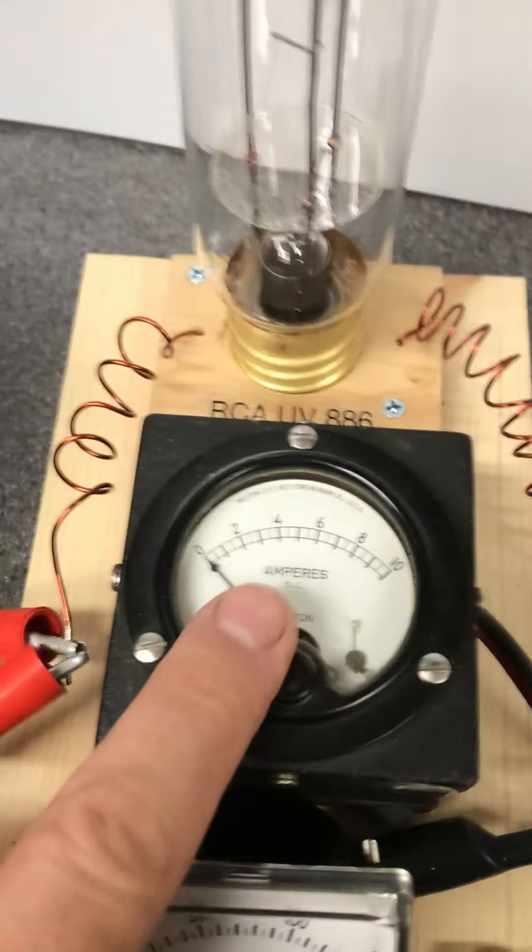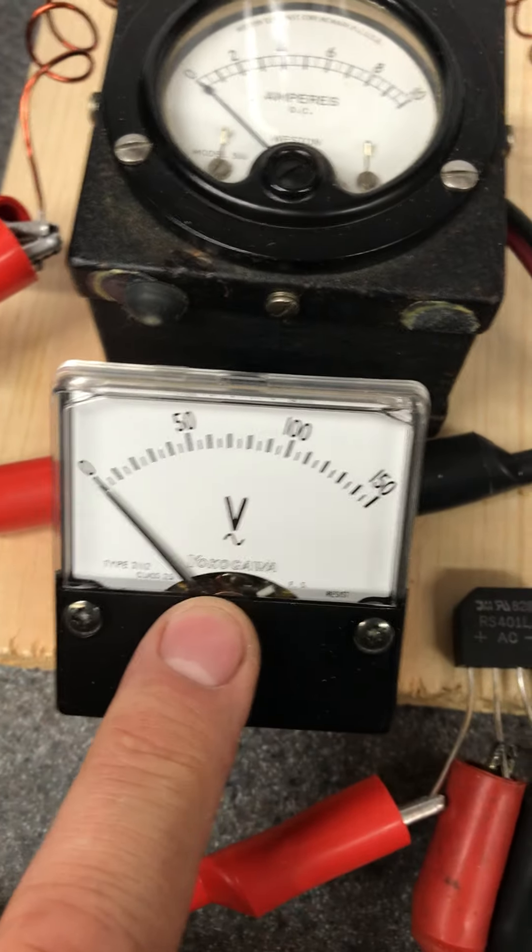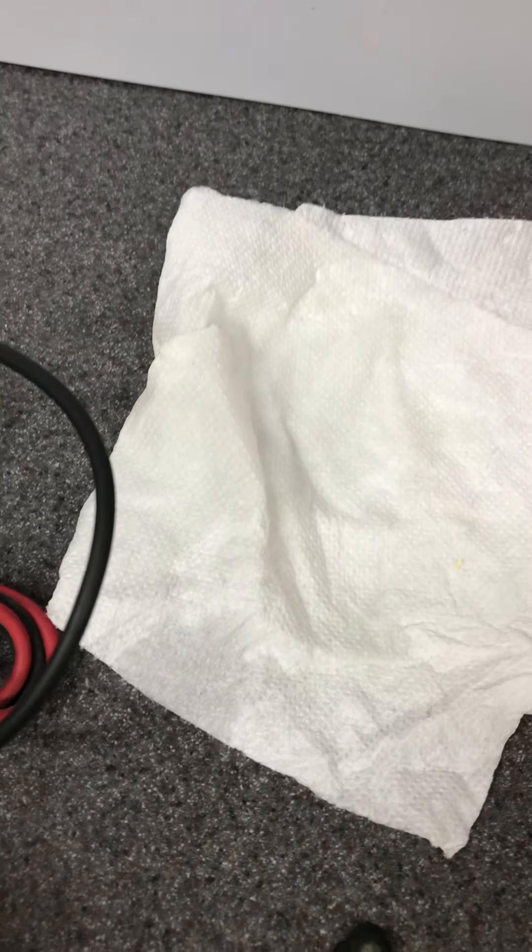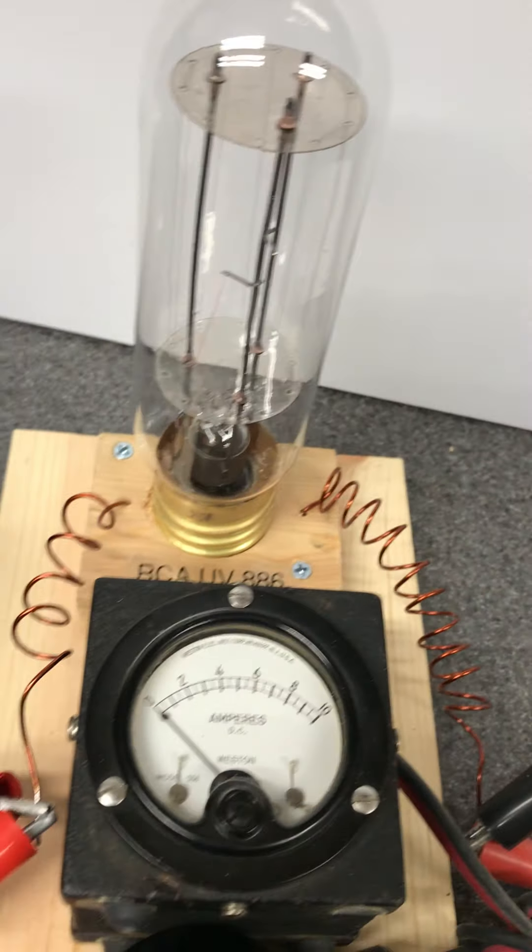I do have AC volts here which actually can read DC as well. So what we got here is the variac going into the four-way bridge. The four-way bridge goes right across the device, the RCA UV-886, but it does it through the current meter.